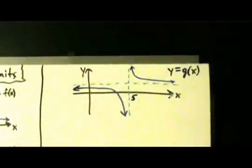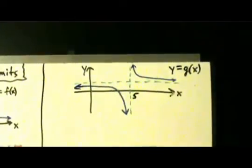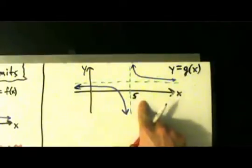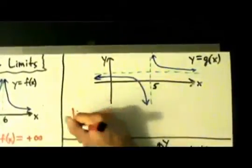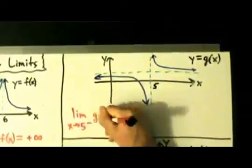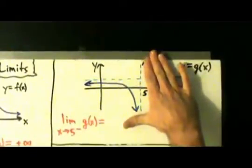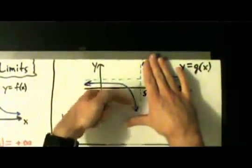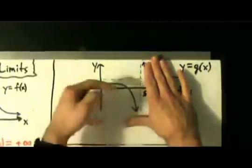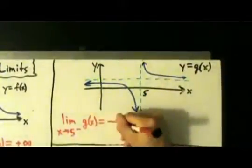Let's take a look at another one over here. Here we have a function y equals g of x, and now we have a vertical asymptote and a horizontal asymptote. So we're probably going to have infinite limits. Here's x equals 5. So the limit as x approaches 5 from the left of g of x equals what? Well, cover up the right side of 5. If we come into x equals 5 from the left, the y values go down and keep decreasing without bound, all the way down to negative infinity. So this is negative infinity.